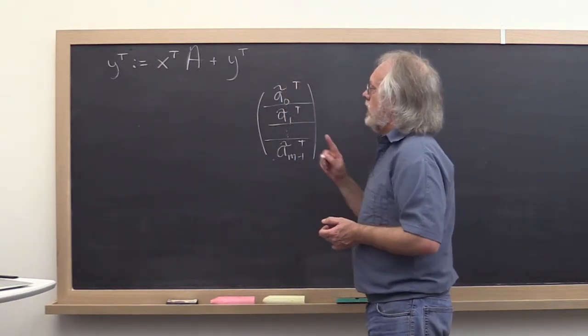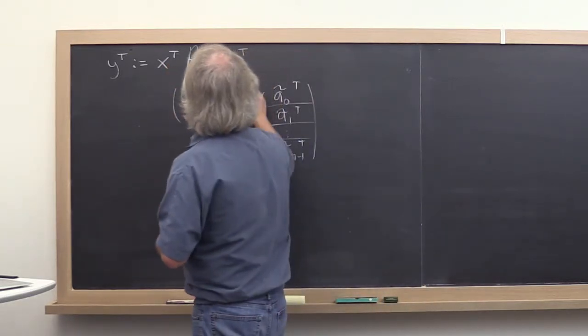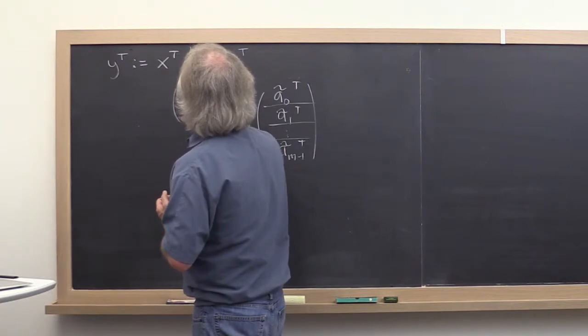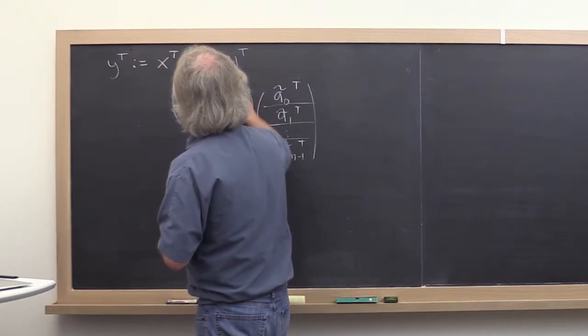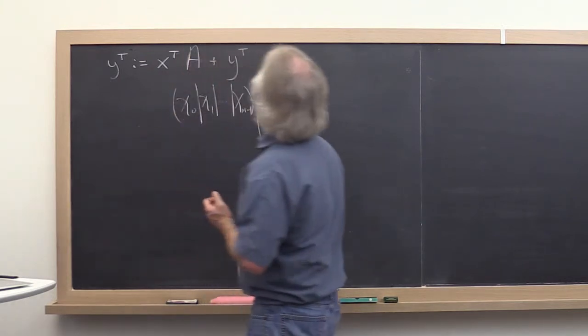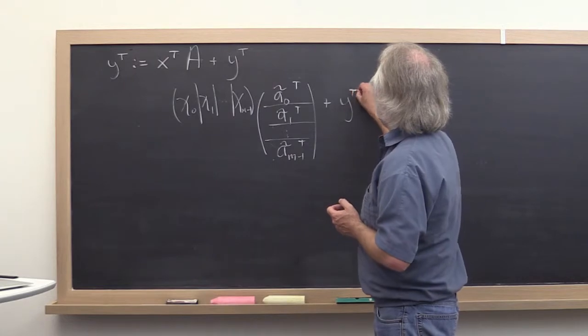Now let's see what happens if we partition x by elements. It's a row vector. So we have chi zero, chi one, through chi m minus one, which must be added to the row vector y transpose.